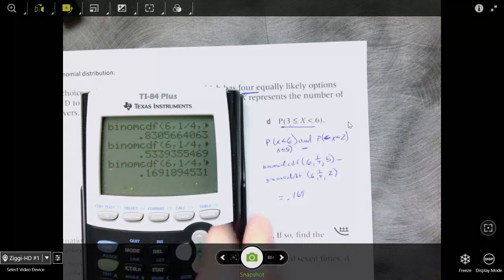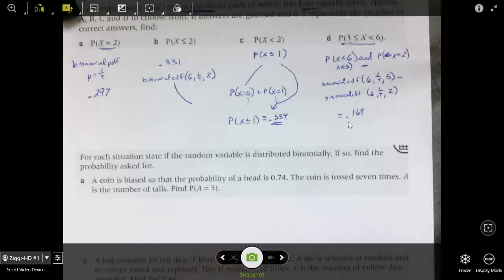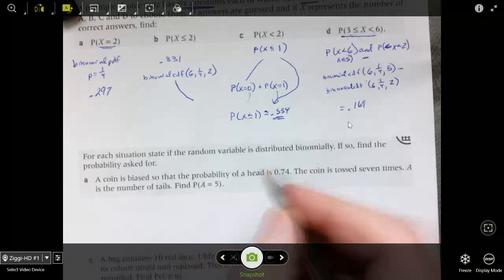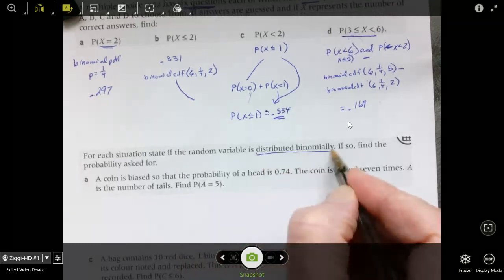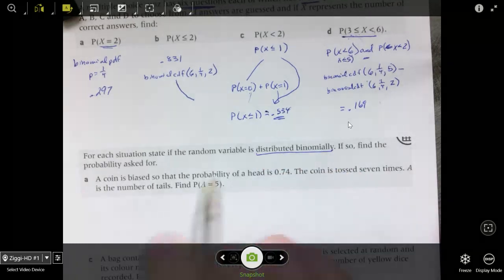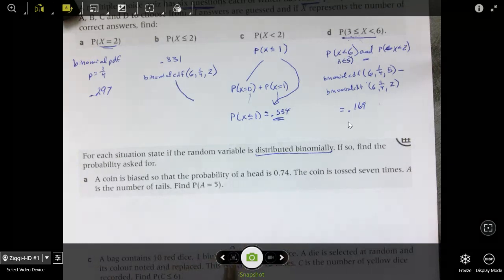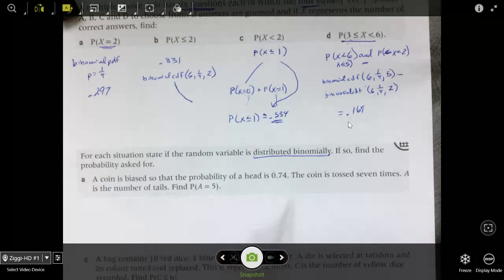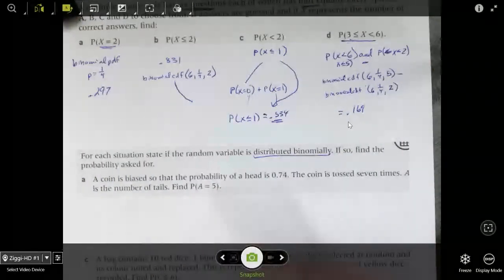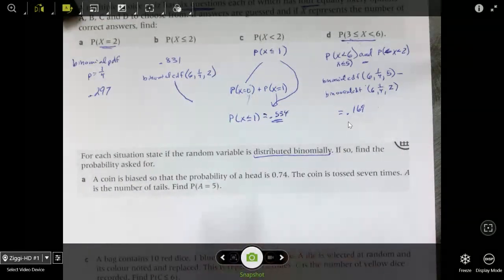It says, if so, find the probability it's asked for. So the probability of a head for a biased coin is 0.74. The coin is tossed seven times. That's your trials. And A is the number of tails. So a little tricky here. The probability of a head is 0.74. So tails would be one minus 0.74, which is 0.26.